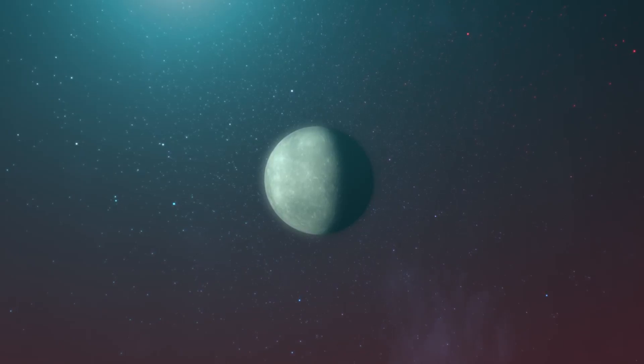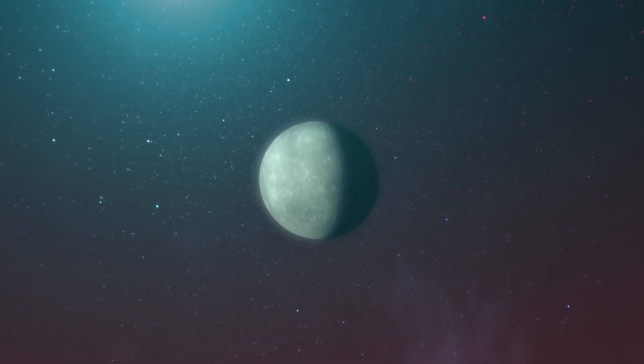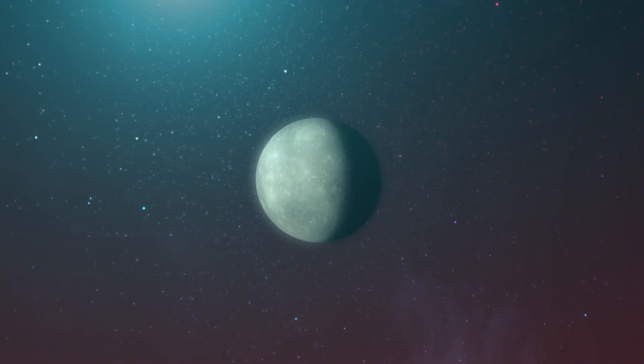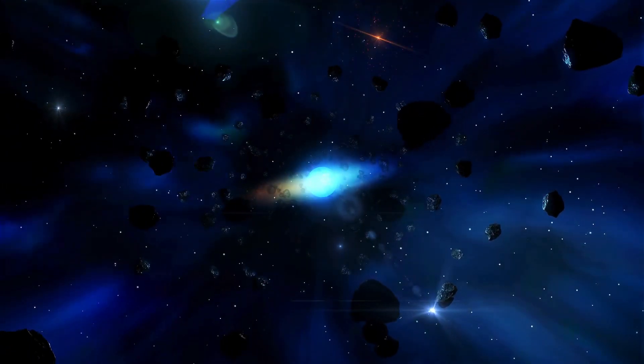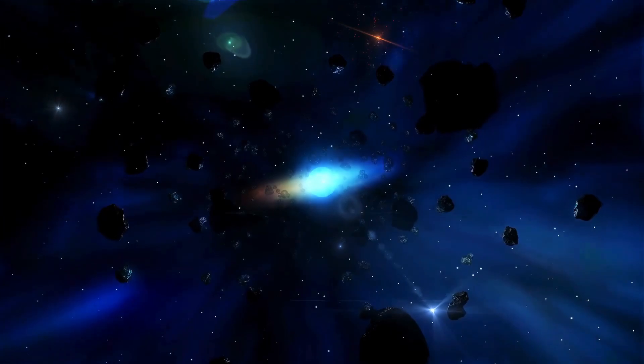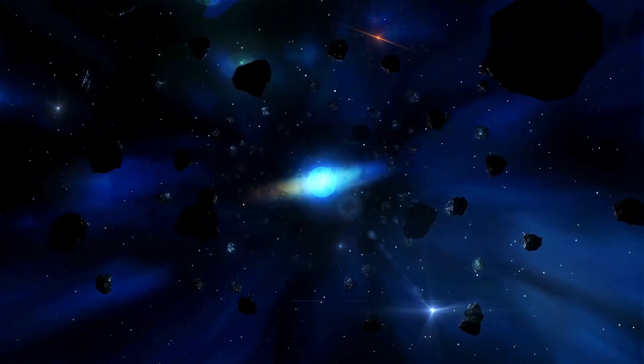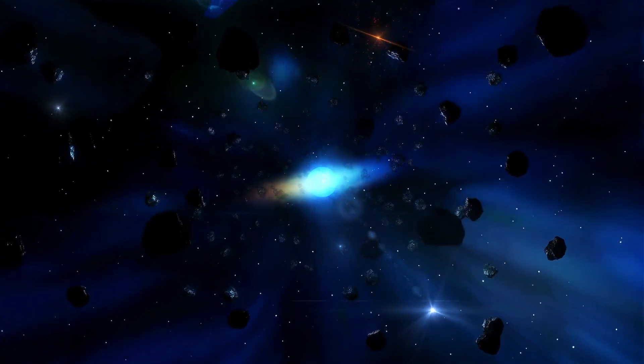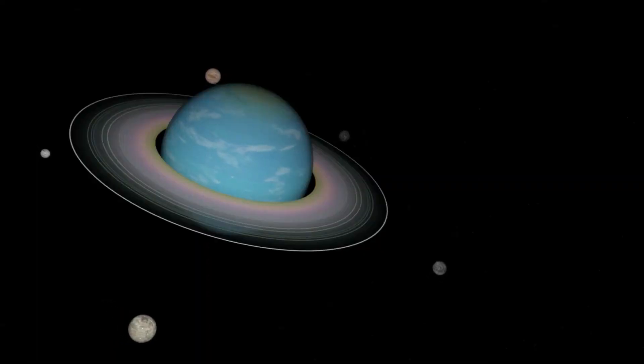Super-Earths are a class of planets that are more massive than Earth but lighter than ice giants like Neptune and Uranus. They are truly one of a kind. They can be made of gas, rock, or even a blend of both, and their sizes can vary from twice the size of Earth to multiple times its mass. They really put the super in Super-Earth.